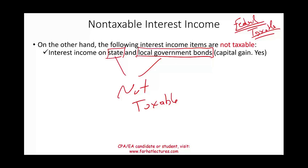The federal government is large and has many resources, so the interest it pays is taxable. State and local governments are smaller and cannot pay higher interest rates. So the federal government, competing in the same borrowing market, offers an incentive: if state or local governments issue bonds and pay interest to bondholders, those bondholders don't have to pay taxes on that interest. This encourages people to lend money to their state and local governments.